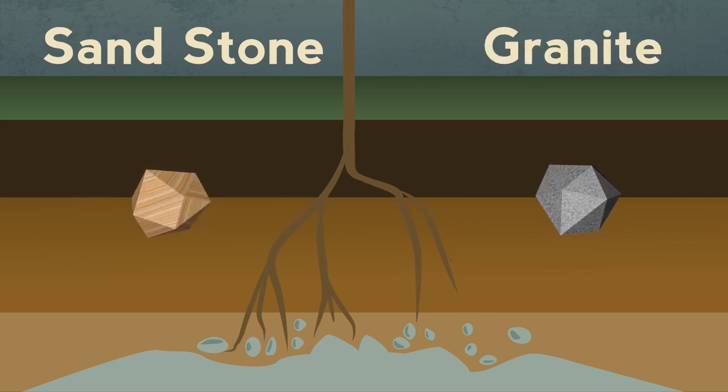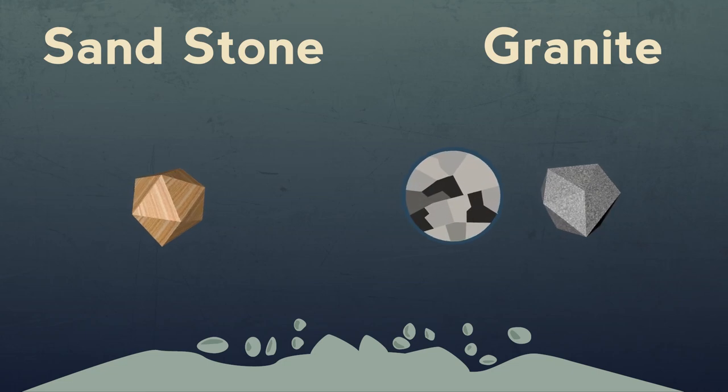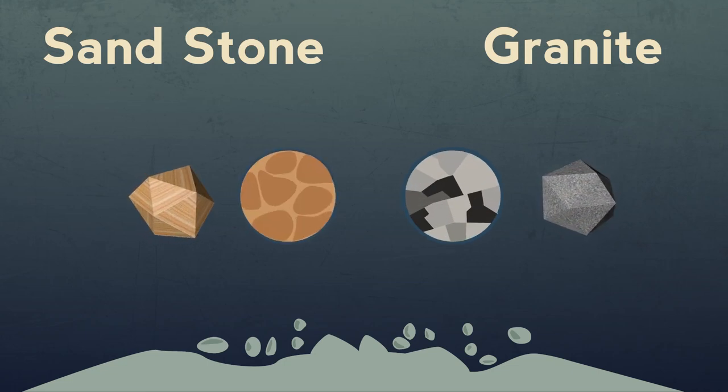They're made up of grains. The granite has interlocking grains like this, but sandstone has rounded grains like this.